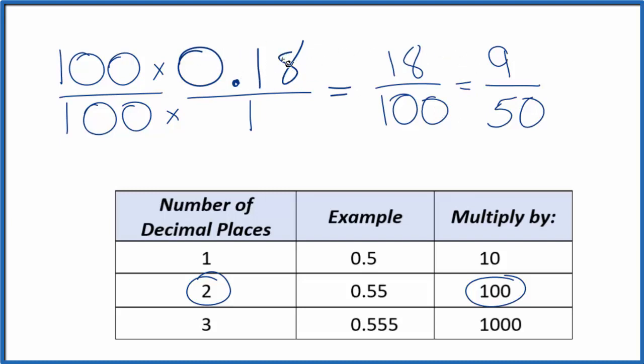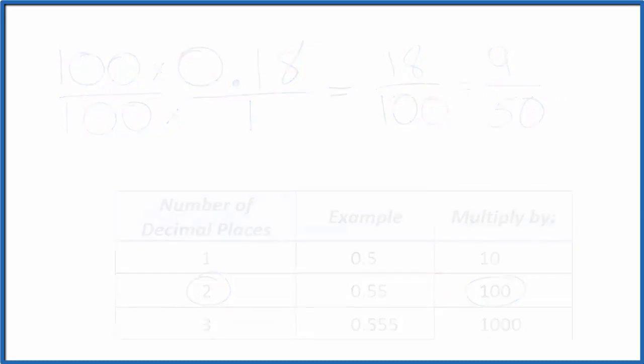This is just a decimal, and this is expressed as a fraction. This is Dr. B converting the decimal 0.18 to a fraction. It's 9 fiftyths. Thanks for watching.